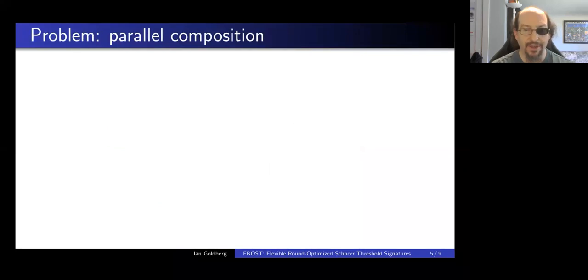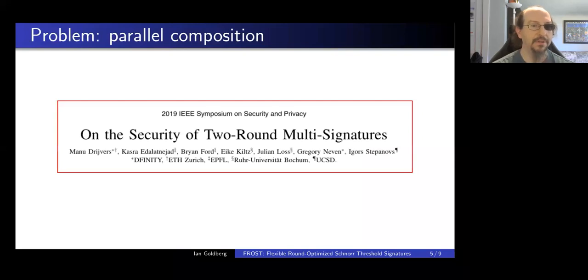So unfortunately, there's a problem with many protocols of this shape. And this problem was noticed in an Oakland 2019 paper by Drijvers et al. And it has to do with parallel composition. It's well known that zero-knowledge proofs often have problems when you try to do parallel composition of them. But here, Drijvers et al. actually produced a concrete attack when you compose many protocols of the form I just showed in a parallel fashion. So let me show you that attack.